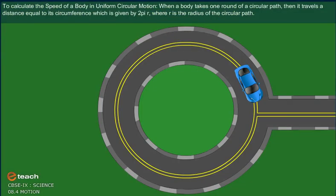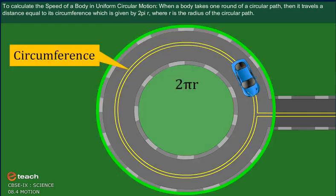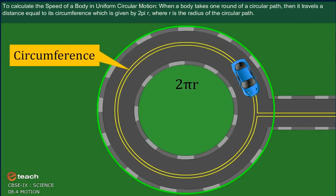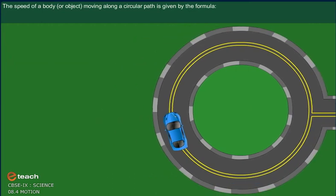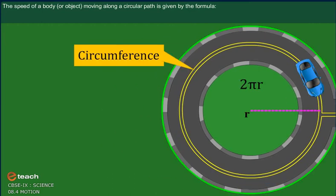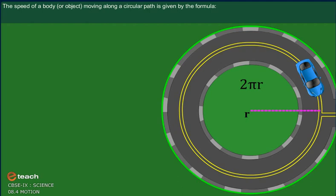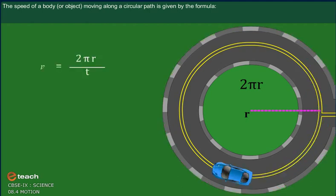To calculate the speed of a body in uniform circular motion: When a body takes one round of a circular path, then it travels a distance equal to its circumference, which is given by 2πr, where r is the radius of the circular path. The speed of a body or object moving along a circular path is given by the formula v = 2πr / t.